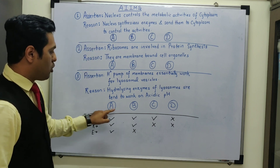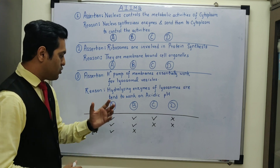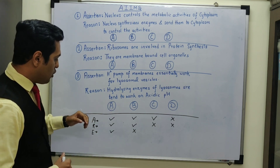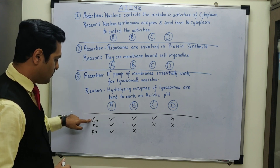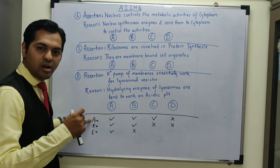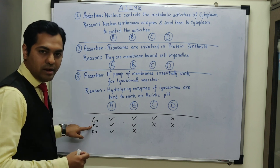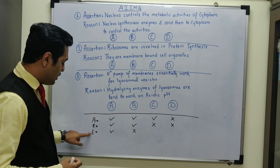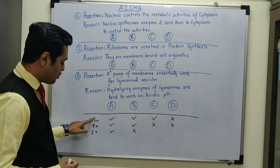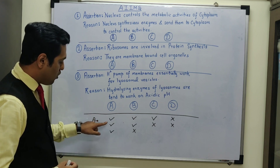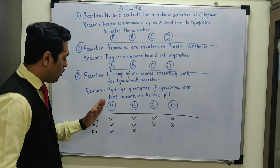There are four options A, B, C, D given. You will mark option A if you feel that the assertion statement is correct, reason is also a correct statement, and the reason is the correct explanation of the assertion — that is when all three: assertion, reason, and explanation are correct, you will mark option A. Whenever assertion is correct and reason is also correct but reason is not the correct explanation of the assertion, you will mark option B.